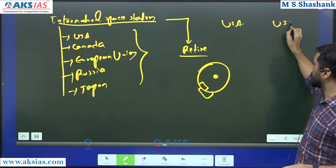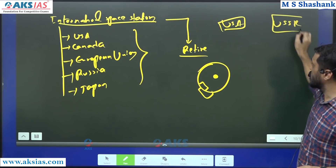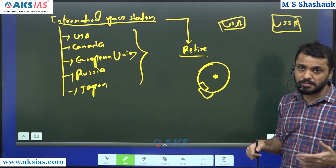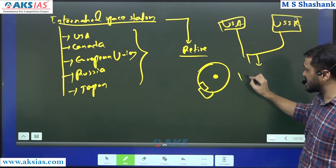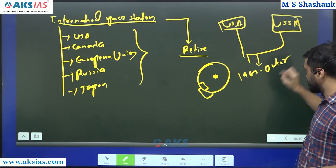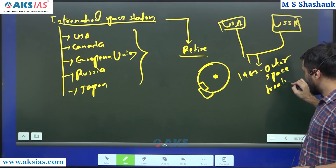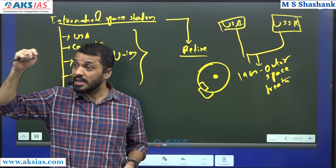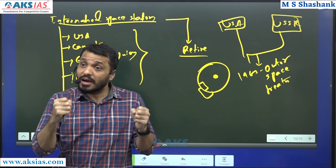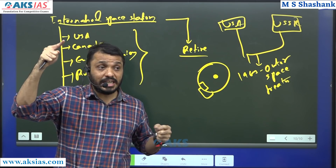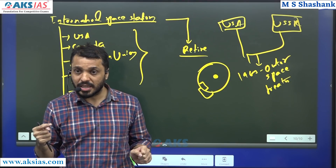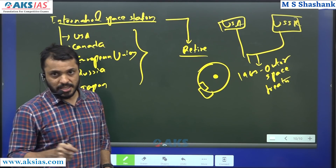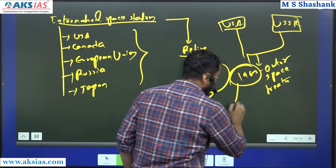During the Cold War, there were many competitions between the USA and Russia. America had the Apollo program. The competition led to the Outer Space Treaty of 1967. In 1967, the Outer Space Treaty became the most important event related to space governance.